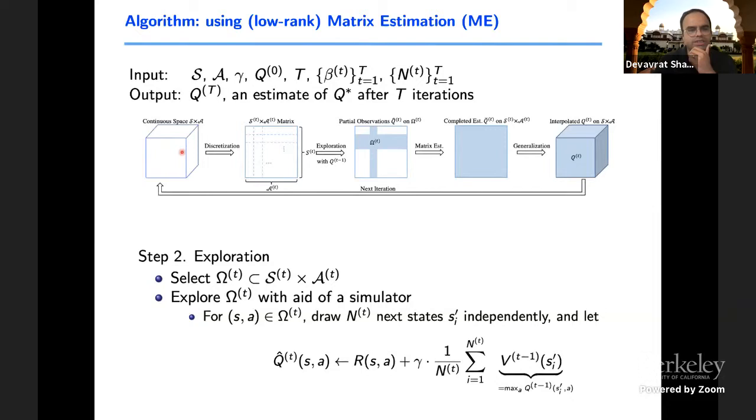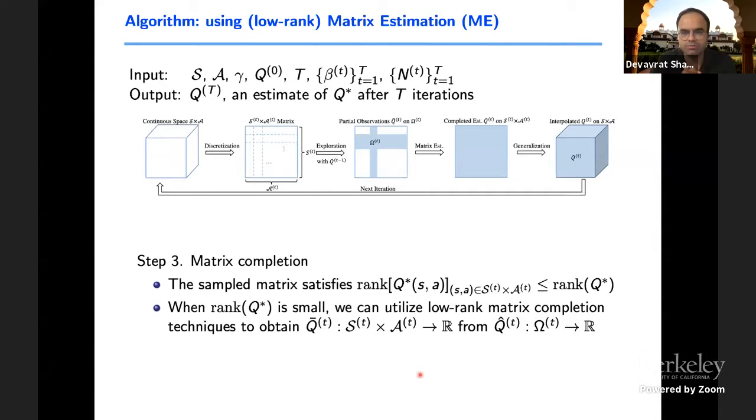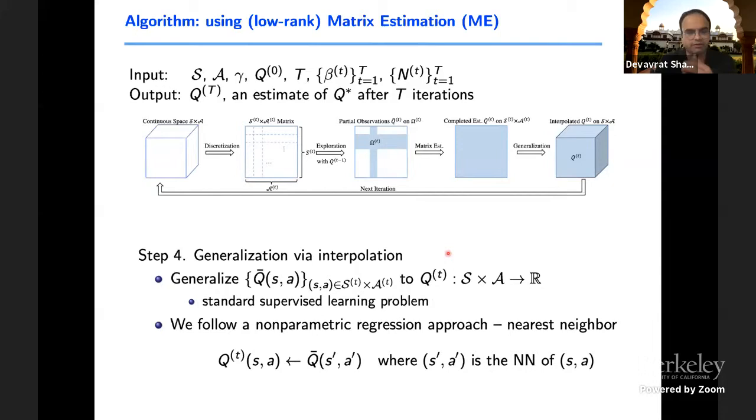Definitely this discounting helps reduce some error that was there from previous step. So that means that we started with some estimation here of Q function. On these sample states, our error has reduced by some amount. However, we have only access to these few sample states and actions, not everything. We'll utilize the matrix estimation to complete these entries in matrix. In the process, we might lose on some of the gains that we made through this step. But hopefully, if you have a good matrix estimation procedure, this loss may not be too much.